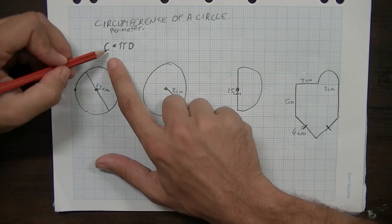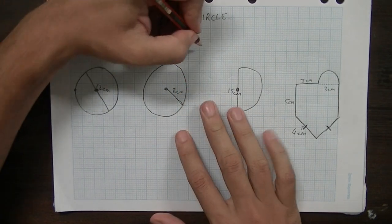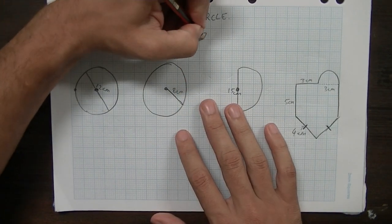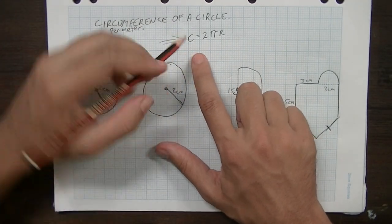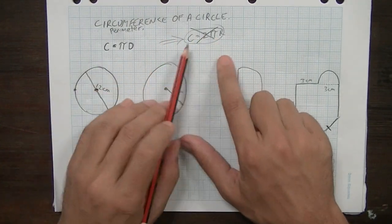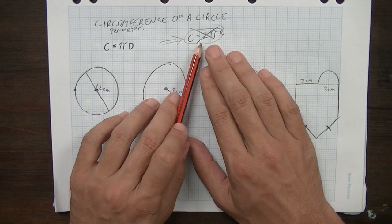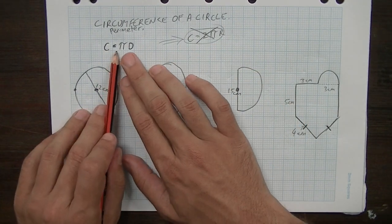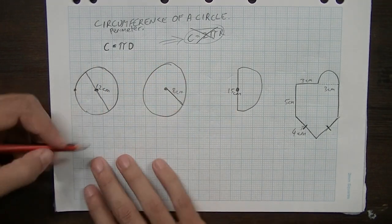Okay, you might have seen this formula written a different way in other places. You might have seen circumference equals 2πr. Now I know that you may have seen this before, but we're going to avoid that. There's a very good reason to avoid that formula, which I'll explain later on. But when we're doing circumference or perimeter of a circle, please try to use this formula here. It'll avoid confusion later on.